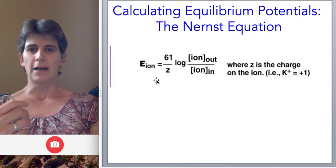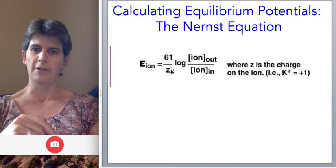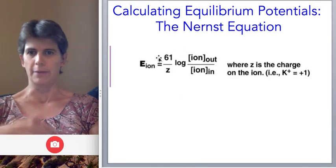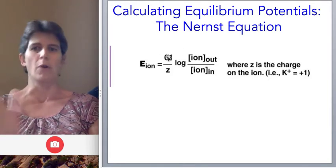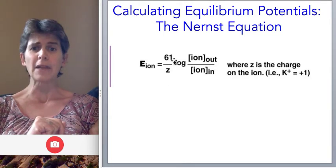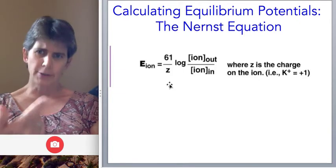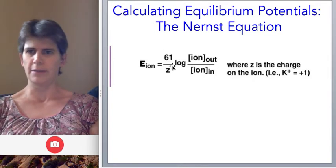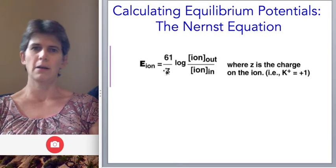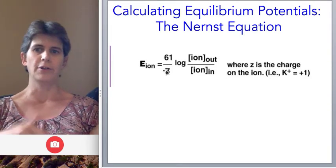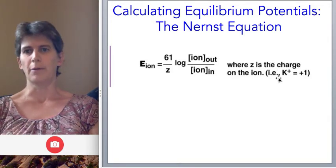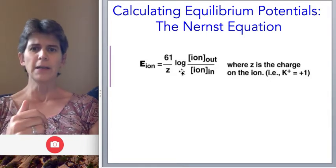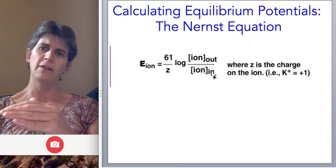For any ion at mammalian body temperature, the constant is 61 — you might see lower numbers in books because those use room temperature or squid body temperature. This number takes into account temperature, the gas constant, and other things that don't vary over the course of the action potential, so we make it a single number. Z is the charge on the ion; since both sodium and potassium are plus one, Z disappears — 61 divided by 1 is 61. Then it's just the log of the concentration of the ion outside the cell versus inside.